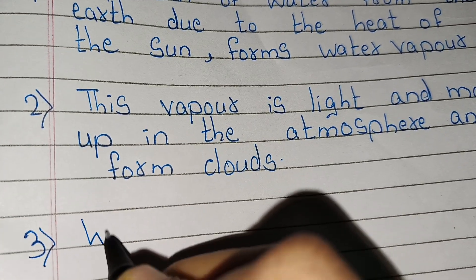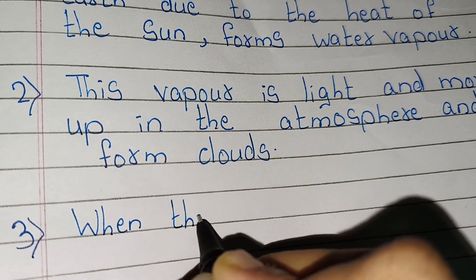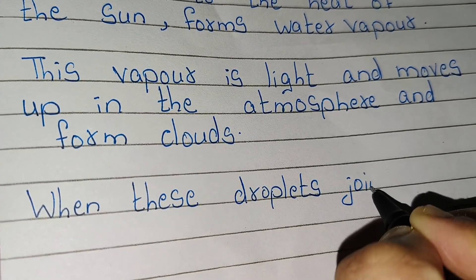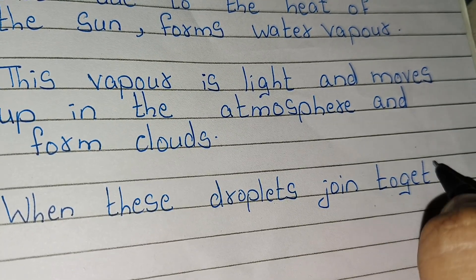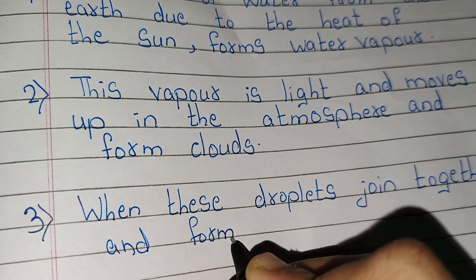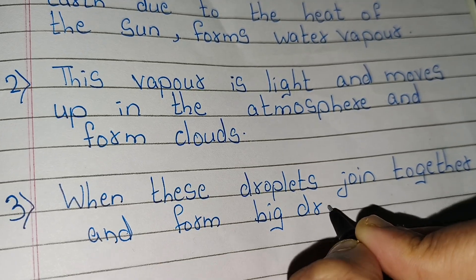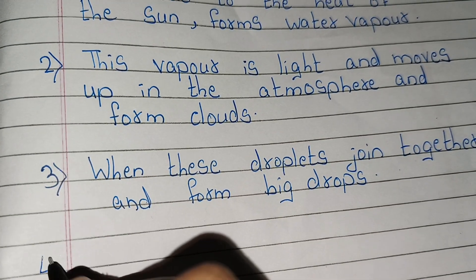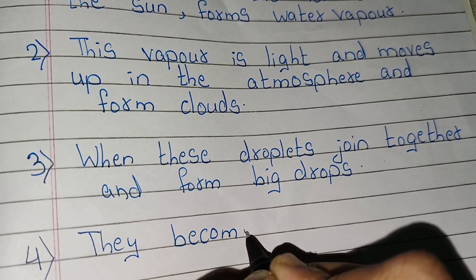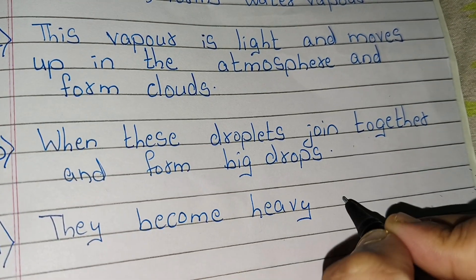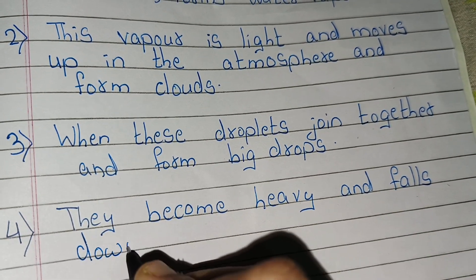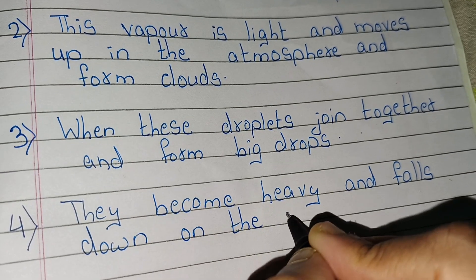When these droplets join together and form big drops, they become heavy and fall down on the earth in the form of rain.